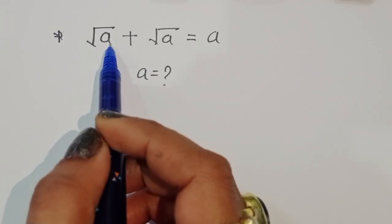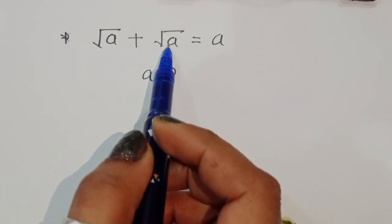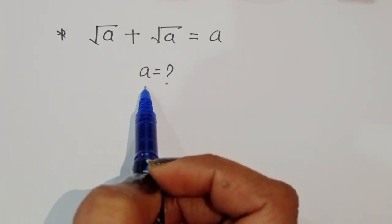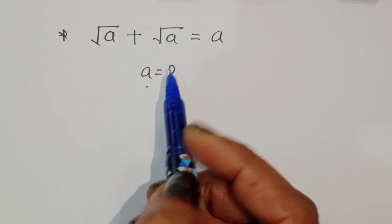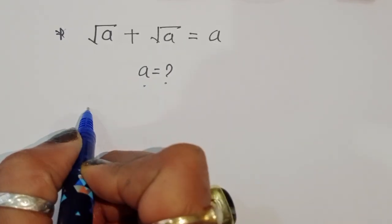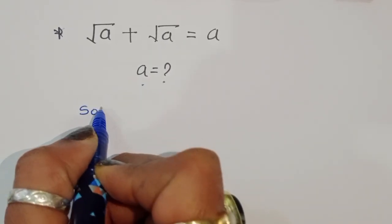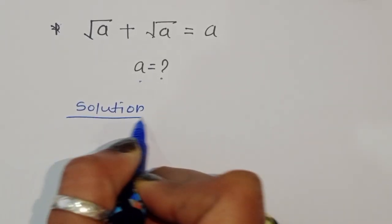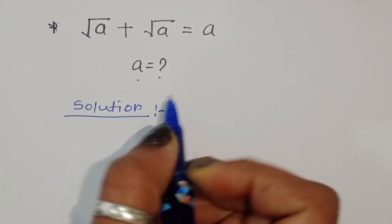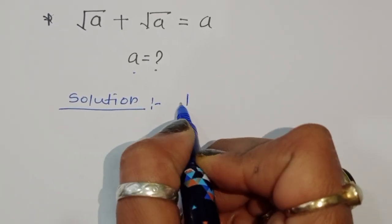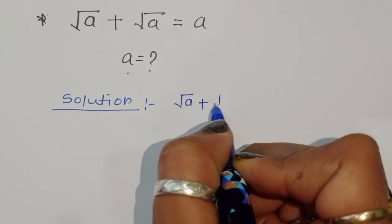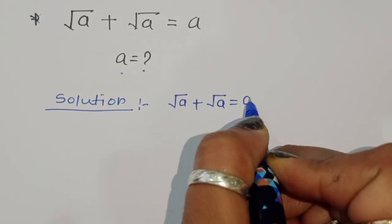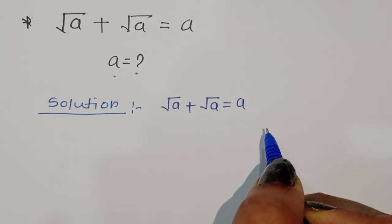The question is: given square root of a plus square root of a is equal to a, we have to find out the value of a. Let's see the solution. Square root of a plus square root of a is equal to a — this is the question.